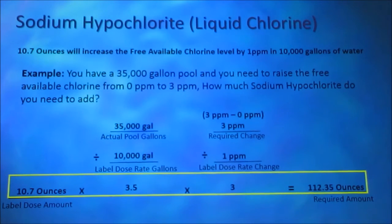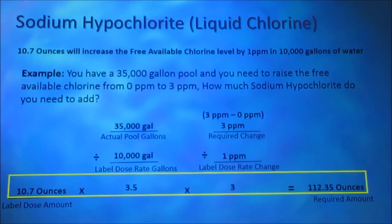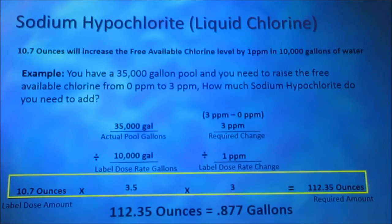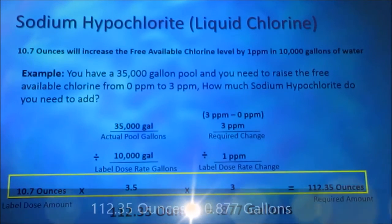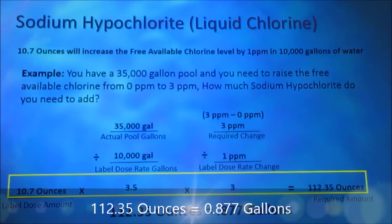Sodium hypochlorite is a liquid measure. We need to convert that to gallons. There are 128 ounces in a gallon. 112.35 divided by 128 equals 0.877 gallons. The answer is 0.877 gallons.